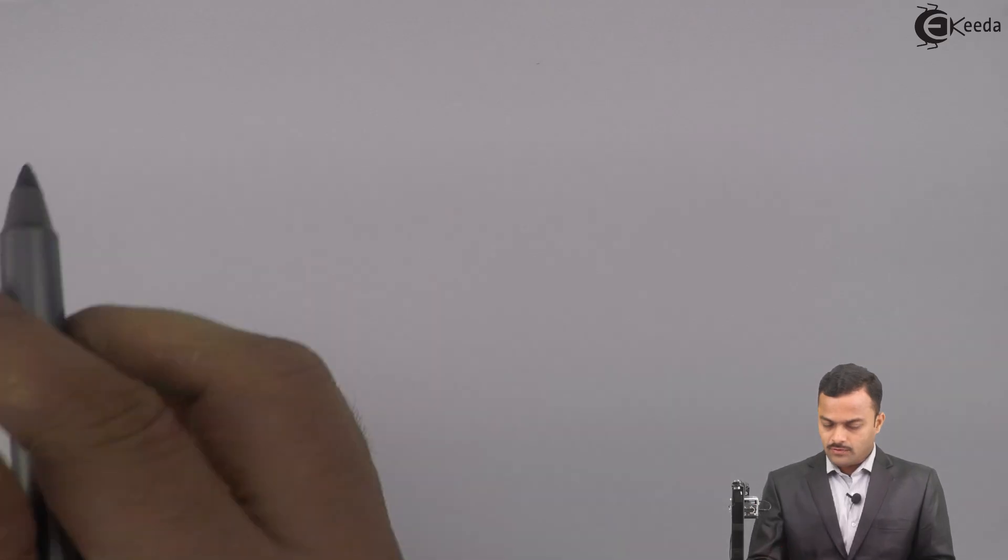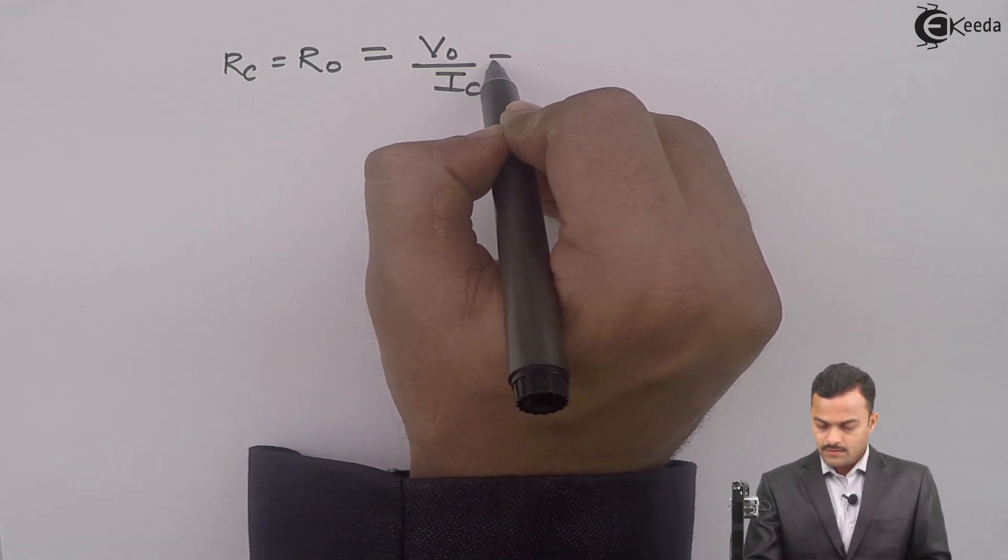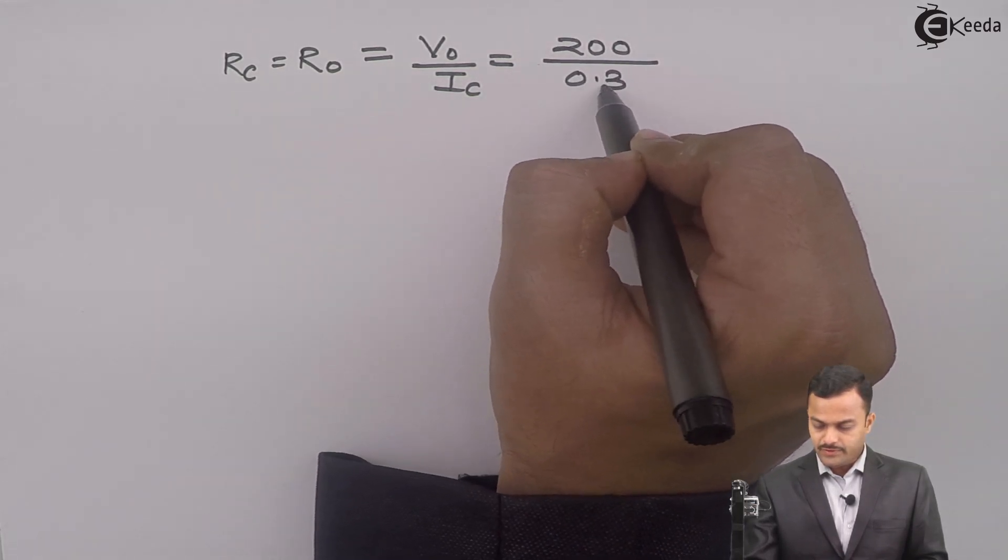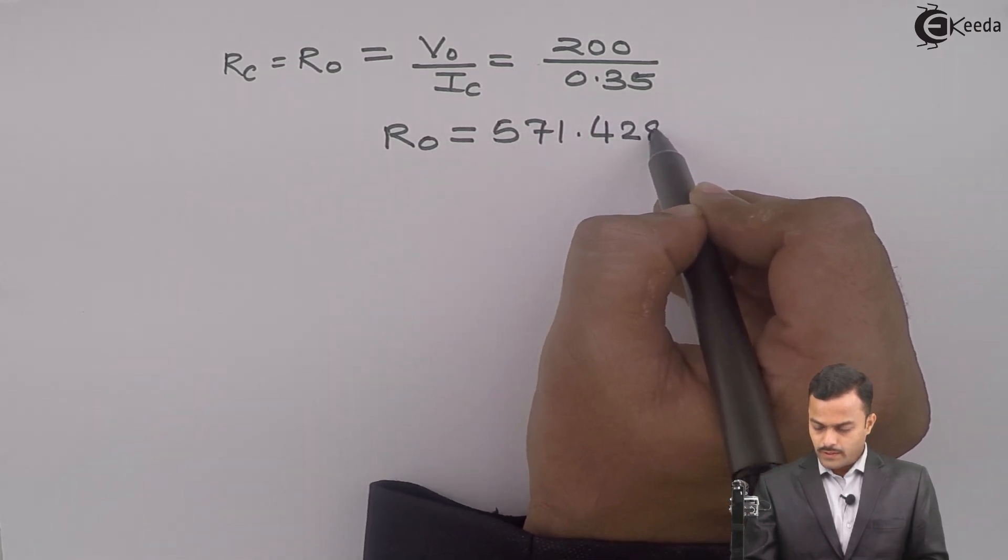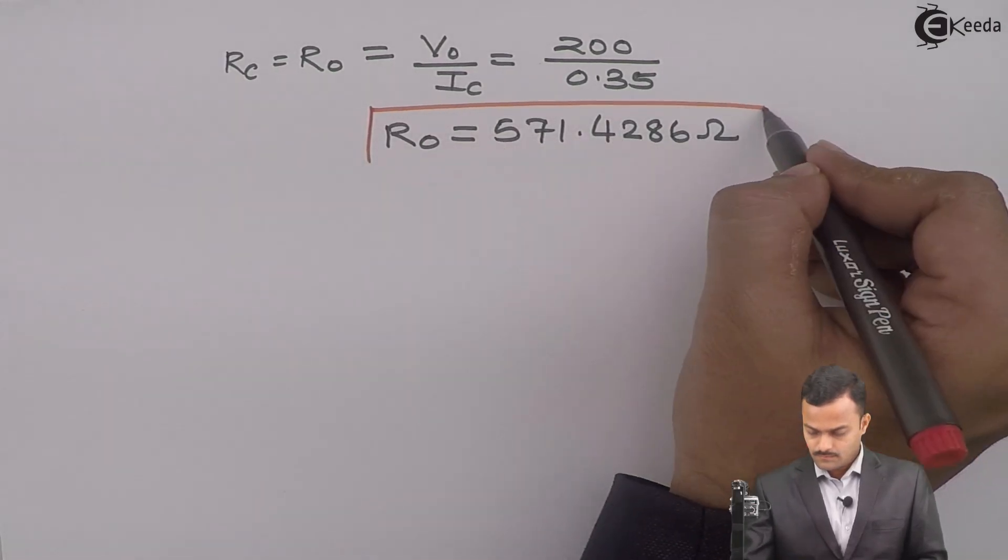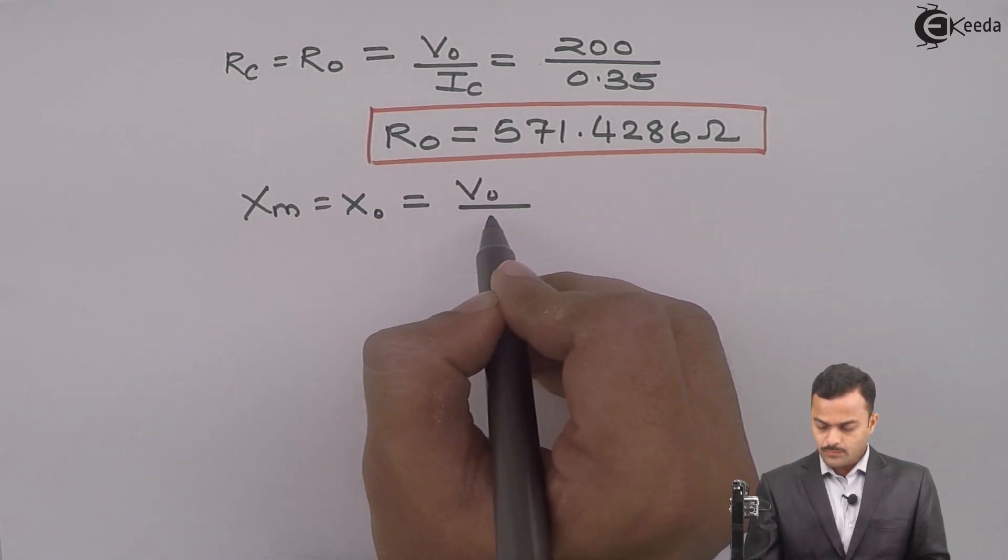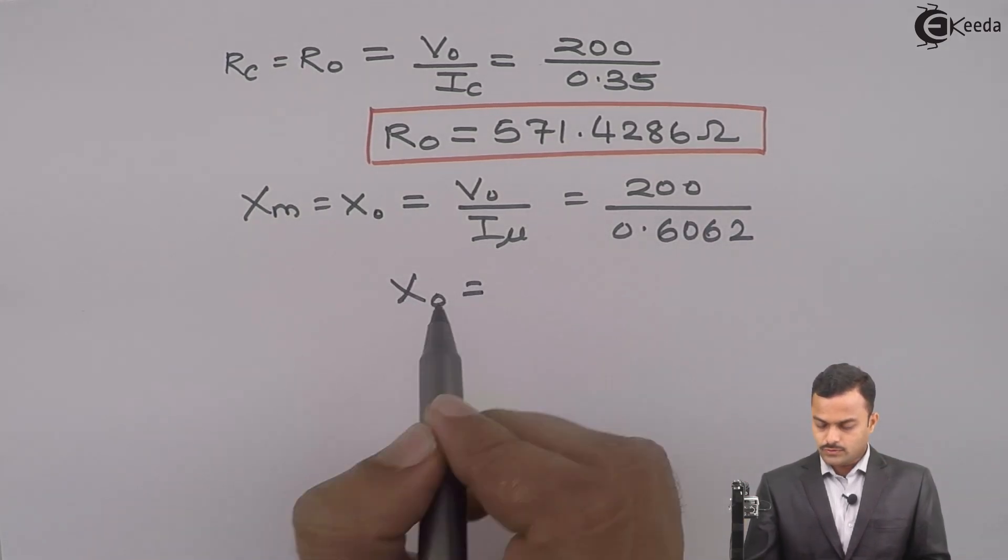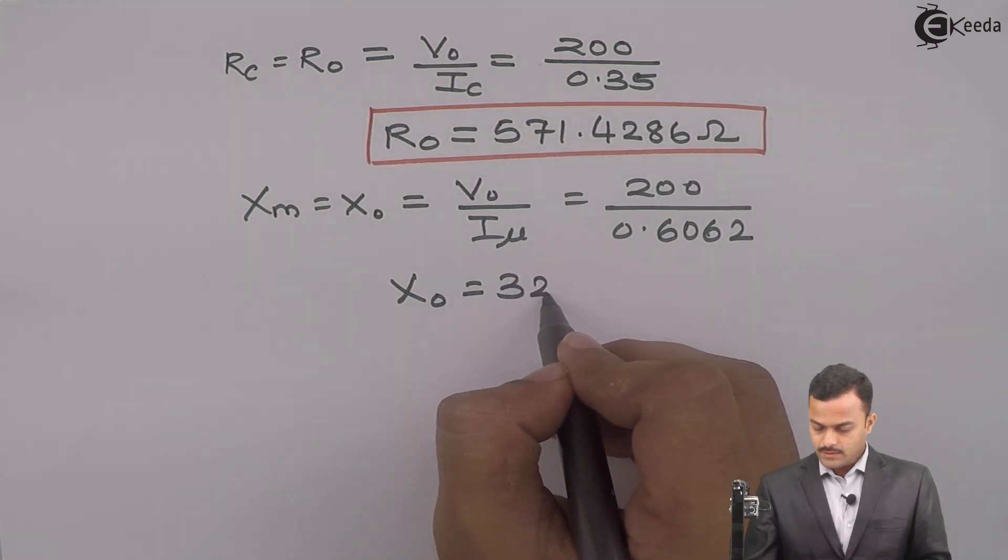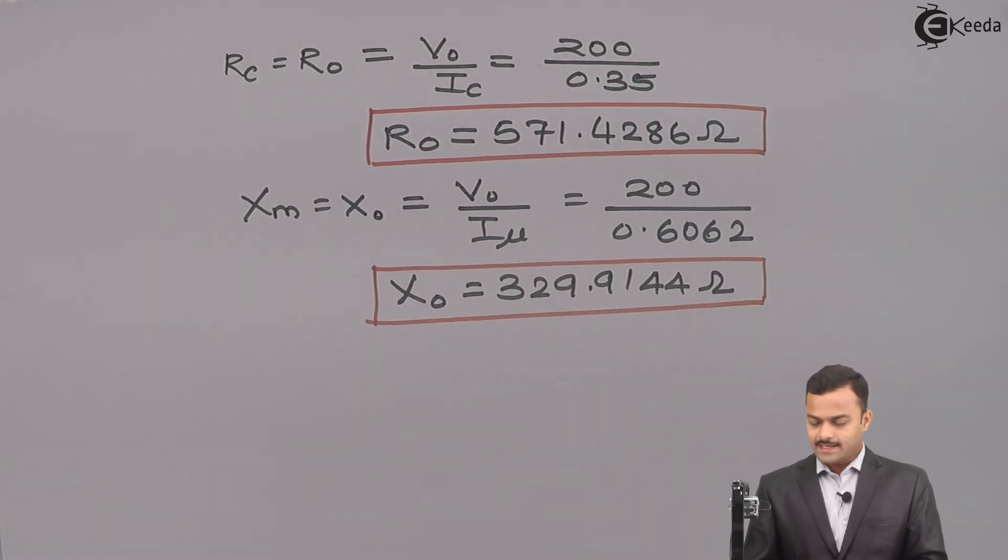What is the value of RC? RC is nothing but R0 equal to V0 upon IC, V0 is 200, IC is 0.35. So I will get R0 or RC you can say 571.4286 ohm. Similarly, XM or you can say X0 equal to V0 upon IMU: 200 upon 0.6062. So X0 you will get equal to 329.9144 ohm. From open circuit test, we always get RC and XM or you can say R0 and X0.